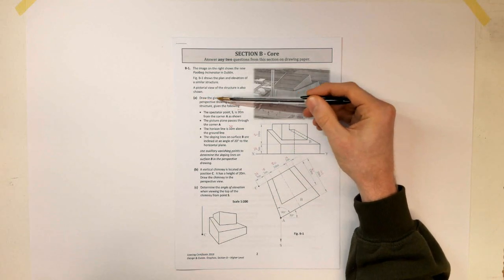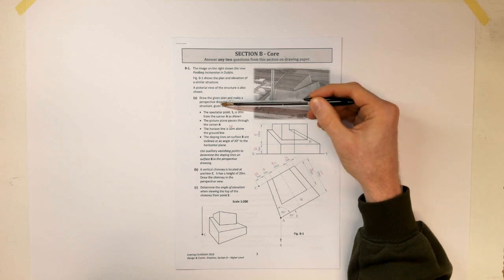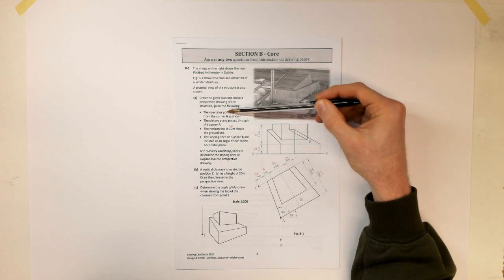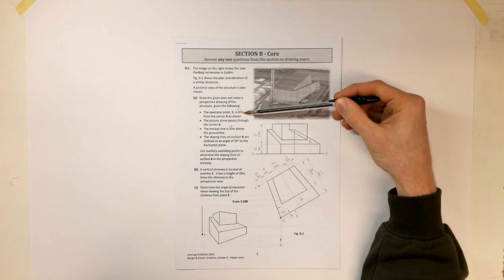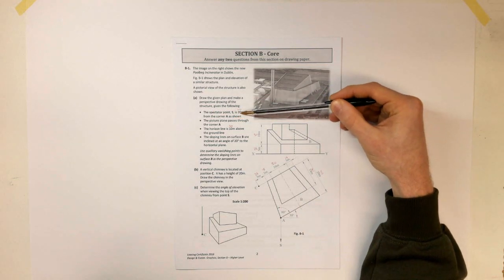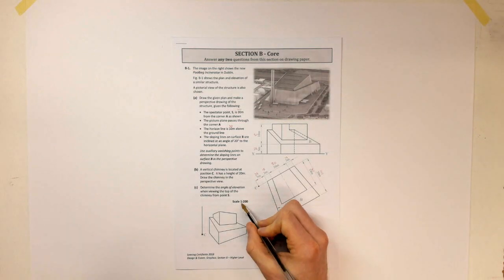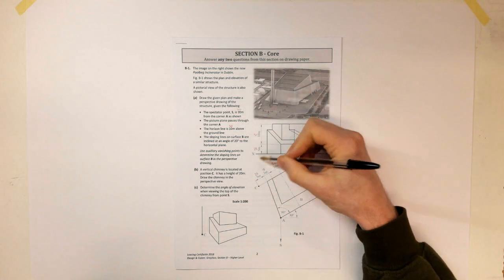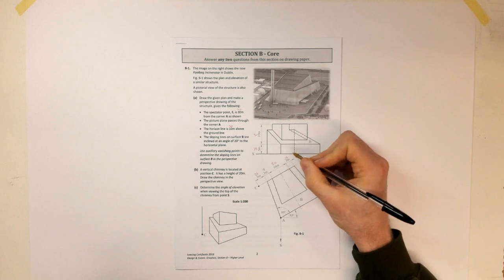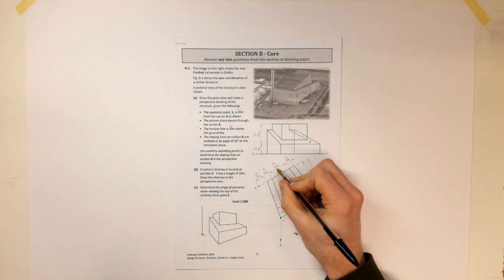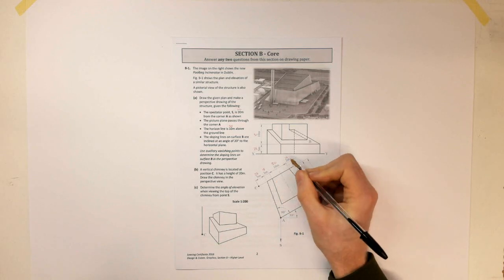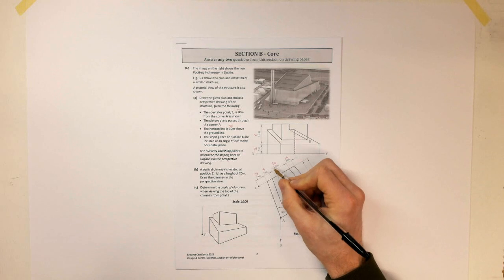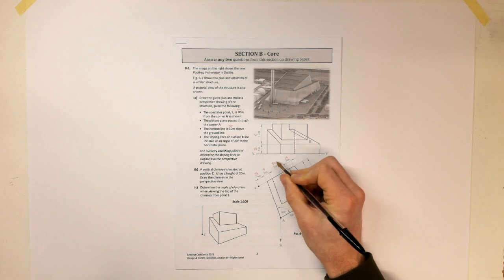Part A: we want to draw the given plan and make a perspective drawing of the structure. Our spectator S is going to be 20 meters from corner A. We have a scale of 1:200. I've converted all of these already — 10 meters converts to 50 millimeters. Basically, I halved 10 and moved the decimal point.